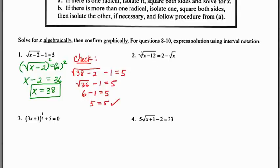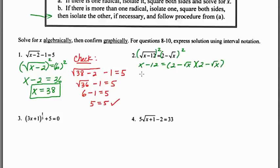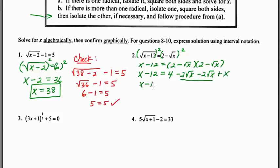Number two is quite a bit harder, so really focus on this — you might need to rewind and watch it a second time. This one has two radicals. I'm going to start by squaring both sides. When you square the square root of a chunk you just get the chunk, so I get x − 12. On the right hand side we're squaring a binomial, so I'll write (2 − √x)(2 − √x). FOILing: first is 4, outer is −2√x, inner is −2√x, and last is x.